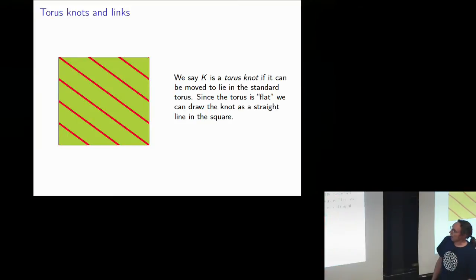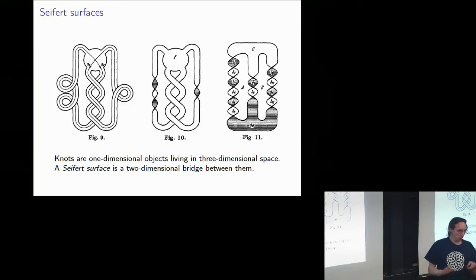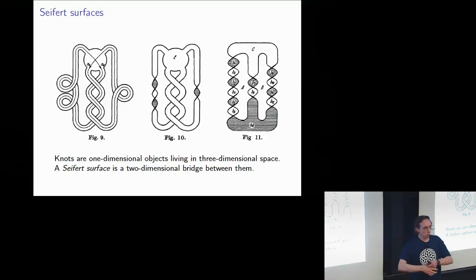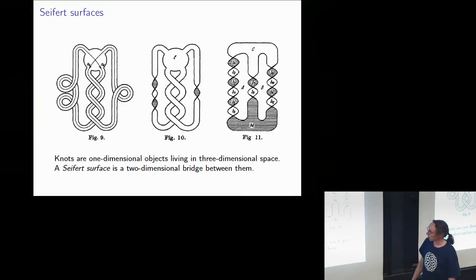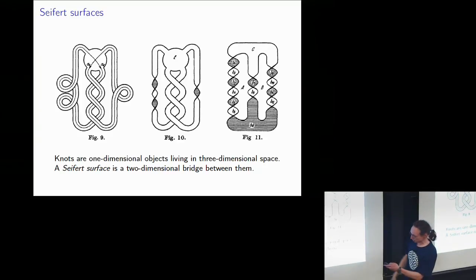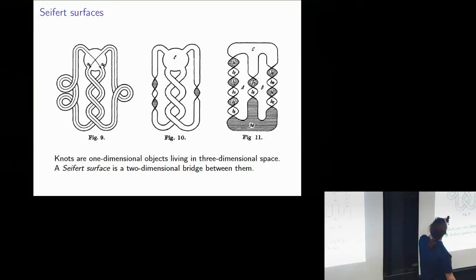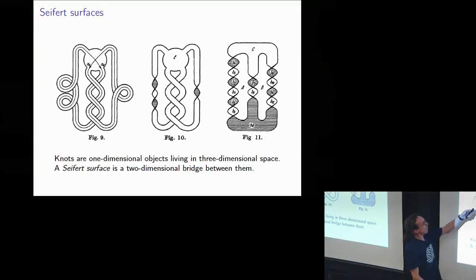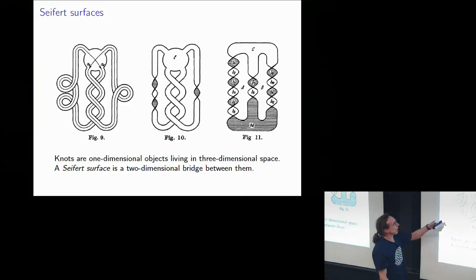Seifert surfaces: we've talked about knots and torus knots. Whenever you have a wire frame you can dip it in soap solution and get a spanning surface — a two-dimensional thing with the wire frame as its boundary. Seifert discussed these in his paper, and these are figures from his paper — it's on the poster outside. The easiest surface to see is the first one: there's a disk and we attach one band in a loopy way, then another band in another loopy way.